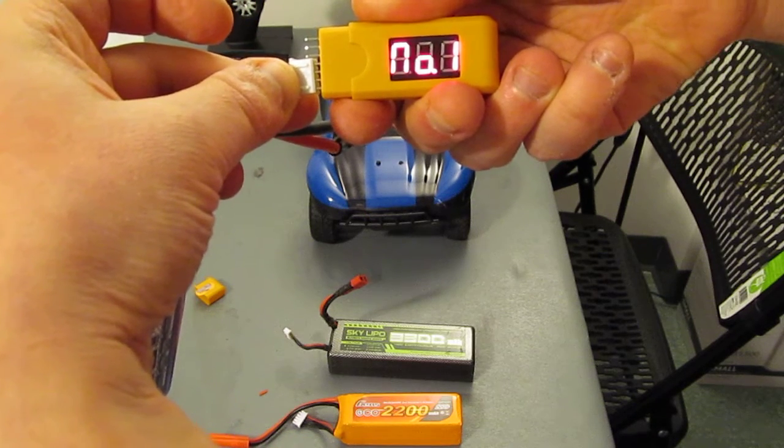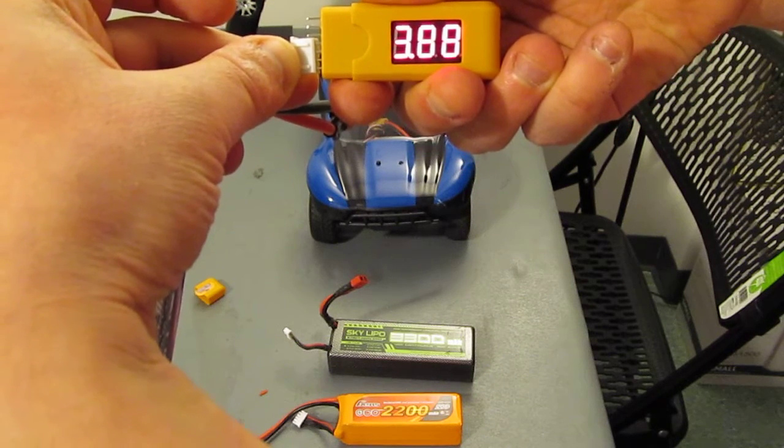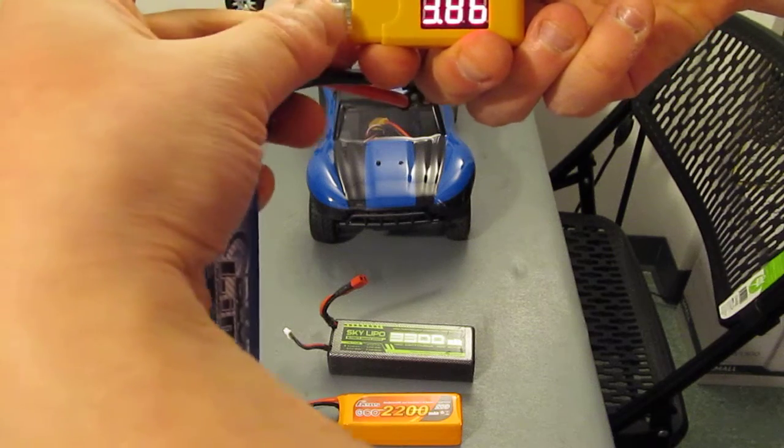It says 11.6 volts, and it reads out individually. So let's look at that again. It tells you each individual voltage also. 11.6 for this 3S.